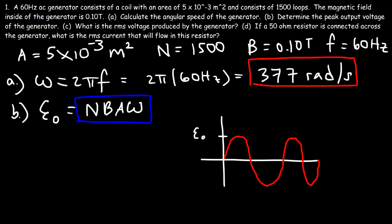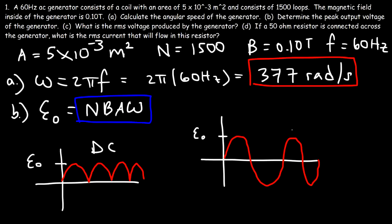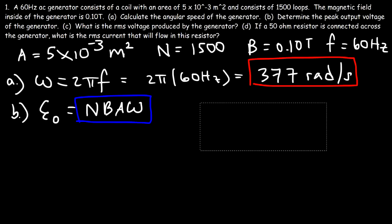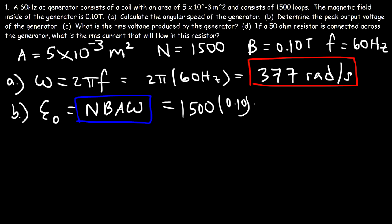A DC generator has an output that only shows the top portion of the graph, whereas an AC generator produces the full sinusoidal waveform. In this problem, N is 1500, B is 0.10, the area is 5×10⁻³ (or 0.005 m²), and the angular speed is 377 radians per second. Multiplying these four numbers together gives us a peak output voltage of 282.75 volts.